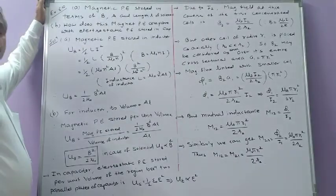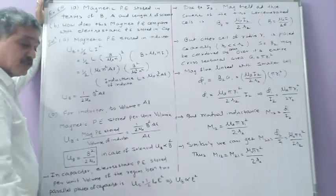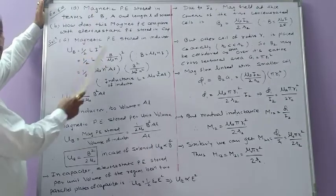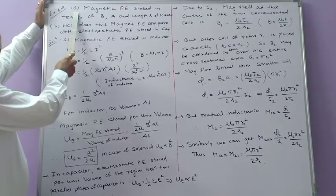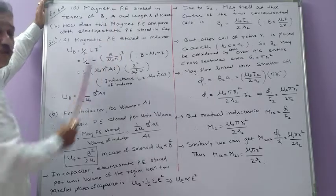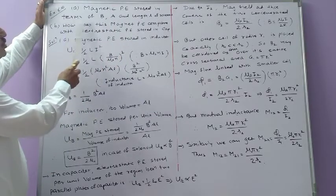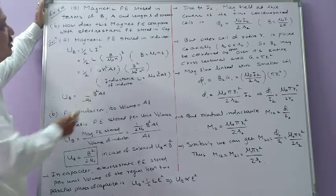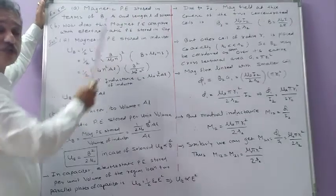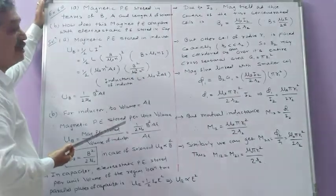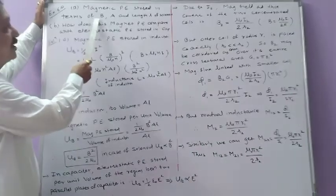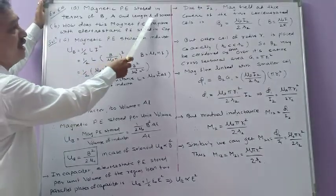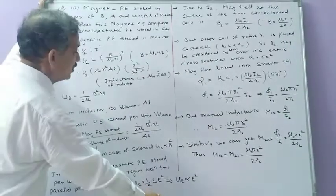Next, Example 6.10. In part A, you have to calculate the magnetic potential energy stored in a solenoid having length L, area of cross section A, and magnetic field B — that is, magnetic potential energy stored in terms of B, A, and length L of a solenoid.